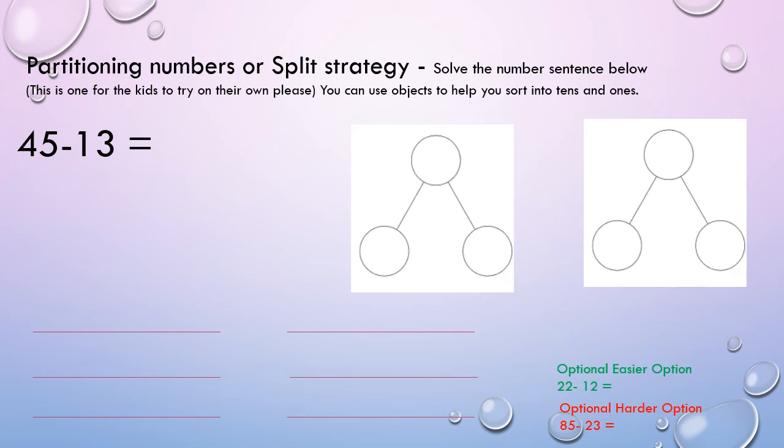The other one, the optional harder option, is 85 minus 23. So you can just do the one that's been set for you, but if you want to have another option that's available to you as well.